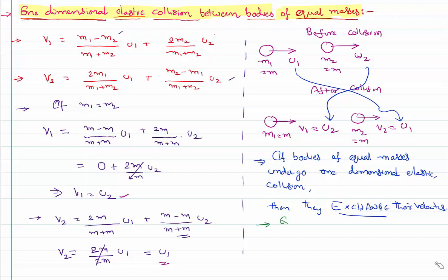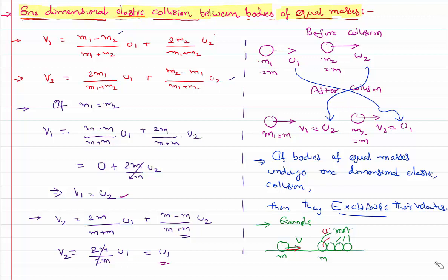Let us consider an example to understand the meaning of this. Let us say there is one ball of mass m moving with velocity v. There are so many other balls which are all in the state of rest. Assume all are in the state of rest, and assume all balls are also identical — so this is a one-dimensional elastic collision. The first ball is having velocity v before the collision, the second body is having velocity zero. There is an exchange of velocity: the first body gets zero velocity and the second body gets velocity v.